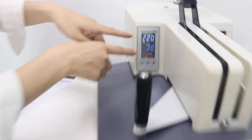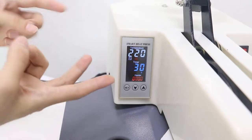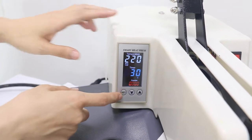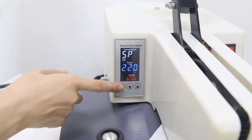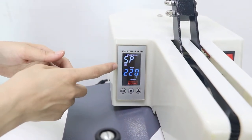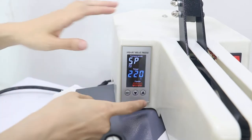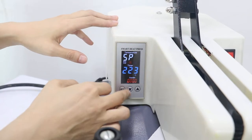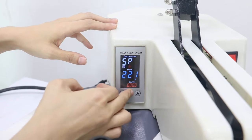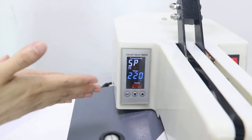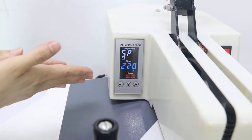We can see the control box here. You can see it's a 3-in-1 control function. First we press this button. We can see file P means temperature setting mode. Now we can press this up idle to increase temperature and this down idle to decrease temperature. Normally we use it 220 degrees for sublimation transfer.